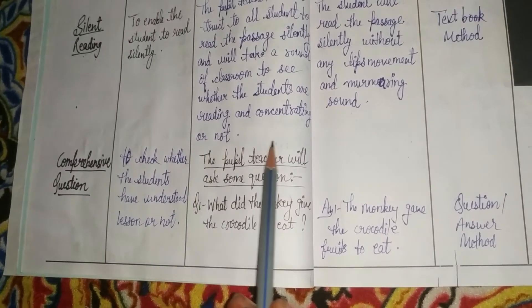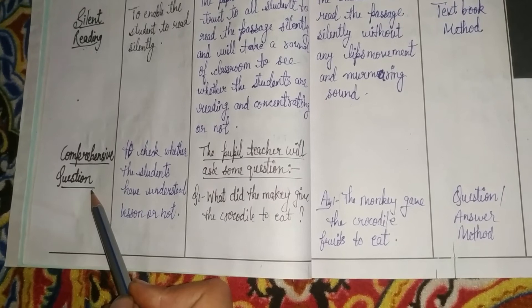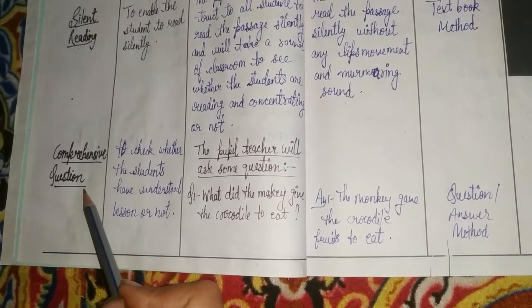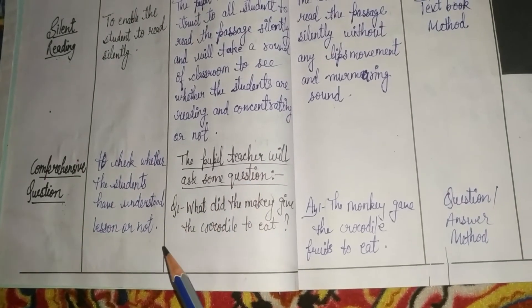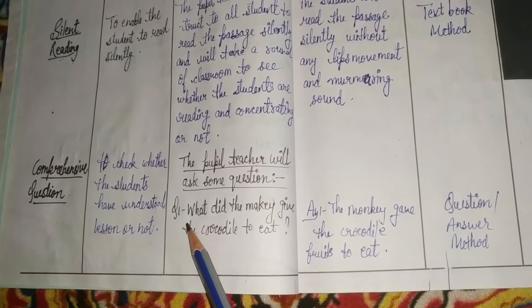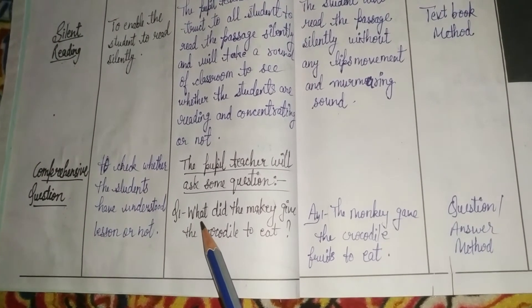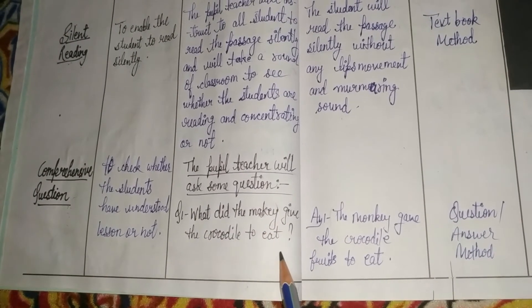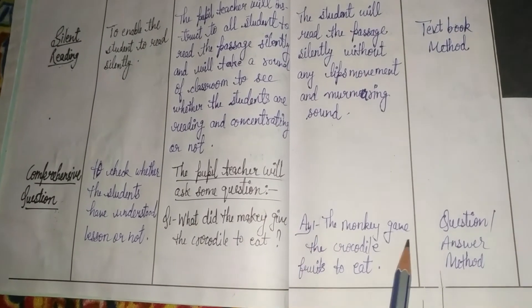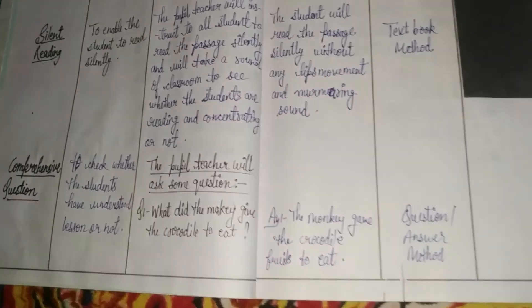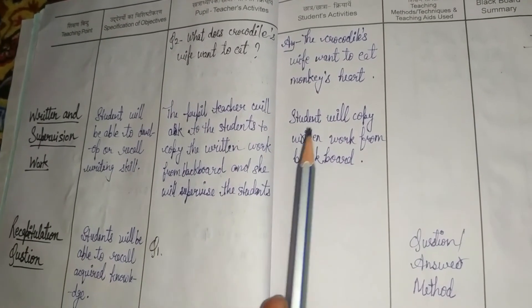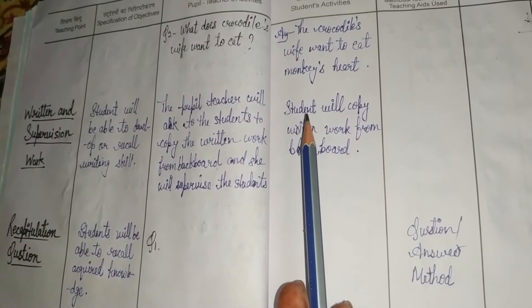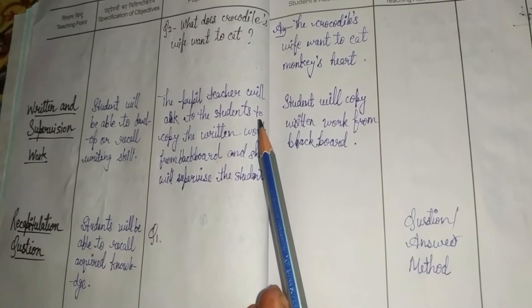Next comes comprehension questions. Even though students have read the chapter, the teacher needs to evaluate whether they have understood it or not. So the teacher will ask two or three questions. For example — from the topic 'The Monkey and the Crocodile': 'What did the monkey give the crocodile to eat?' The student will reply: 'The monkey gave the crocodile fruits to eat.' Another question: 'What does the crocodile's wife want to eat?' The student will reply: 'The crocodile's wife wants to eat the monkey's heart.' If they read the chapter properly, they will answer correctly.